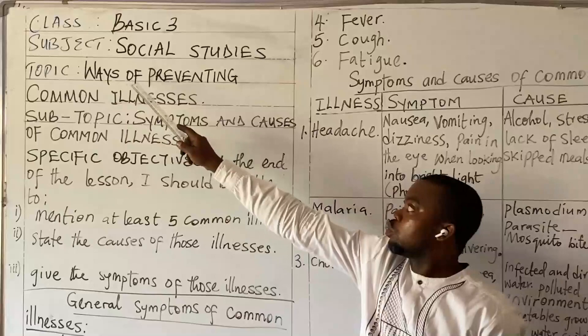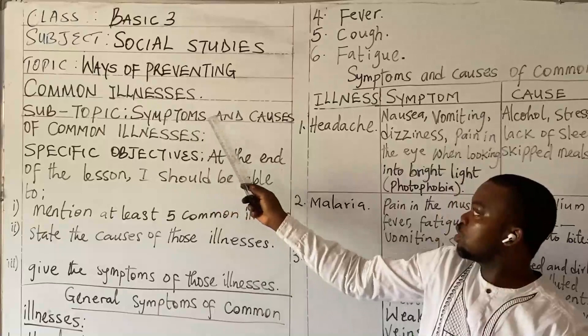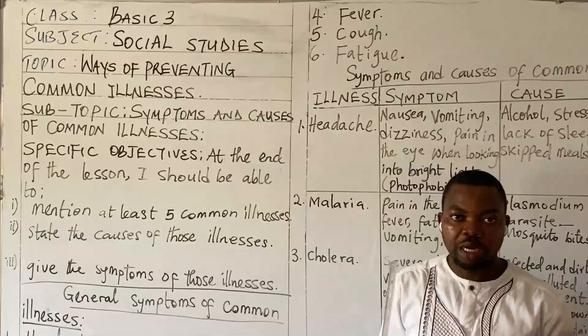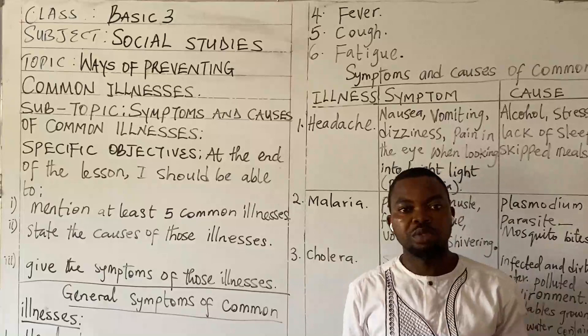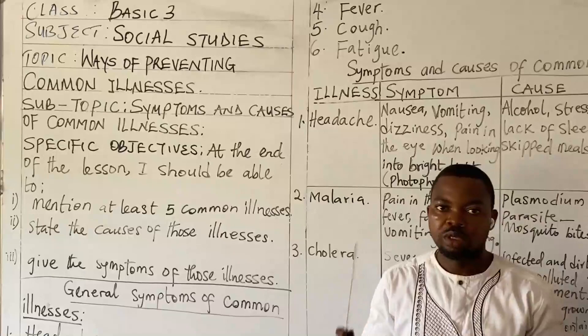We are going to look at ways of preventing common illnesses, and our sub-topic is symptoms and causes of some common illnesses. Remember last week we looked at this topic — ways of preventing common illnesses — we looked at the meaning of illness, we looked at the meaning of common illness and some examples of common illnesses.